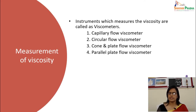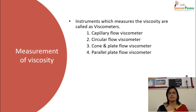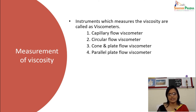For measurement of viscosity, the instruments used are called viscometers, and viscometers measure under one flow condition. The most popular viscometers to measure shear viscosity are: capillary flow viscometer, circular flow viscometer, cone and plate viscometer, and parallel plate viscometer.